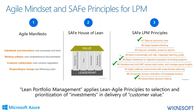The four SAFe LPM principles are: taking an economic view; basing milestones on objective evaluation of working systems — really focusing on an MVP and demonstrating that MVP; visualizing and limiting WIP in order to reduce batch sizes, controlling the amount of work you're committing to; and decentralized decision making, which applies within lean portfolio management both top-down and bottom-up as we manage the portfolio Kanban.